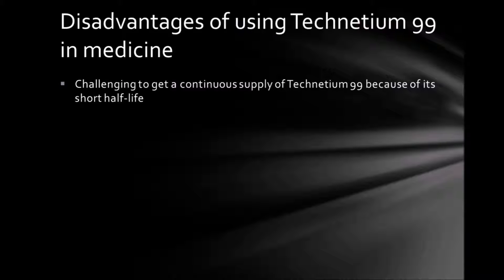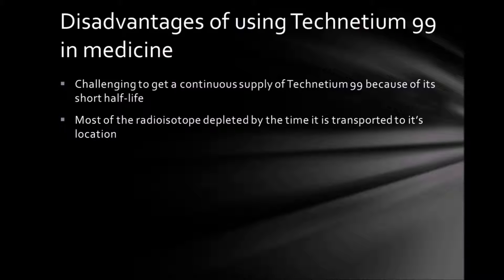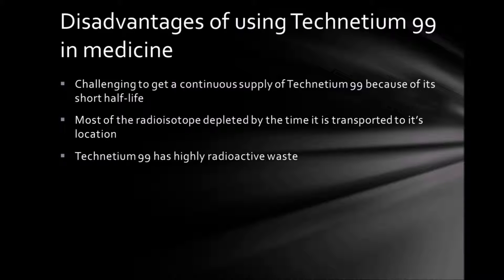However, there are also disadvantages in using Technetium-99 in medicine. It is challenging to get a continuous supply of Technetium-99 due to its extremely short half-life of 6 hours. If the transportation time of the radioisotope is lengthy, then most of the radioisotope would be depleted by the time it reached the hospital. Additionally, the waste of Technetium is highly radioactive.